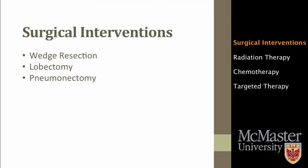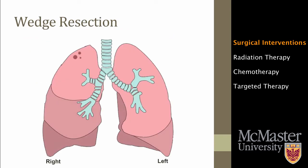Surgical interventions are often used to remove the cancerous tissue from the lungs. There are three main types of surgical interventions used to treat lung cancer. The first is a wedge resection. This is when a small portion of the lung is removed. This can be done not only to remove cancerous tissue, but as a diagnostic technique to check whether or not lung tissue is cancerous. This technique is relatively less invasive and is recommended when the patient's lung function is not high enough to allow for other, more invasive procedures.